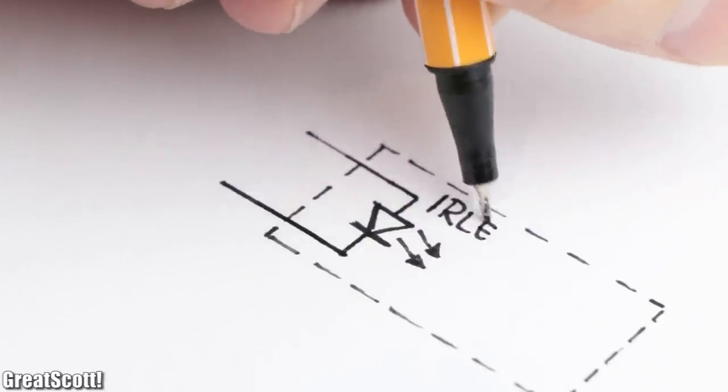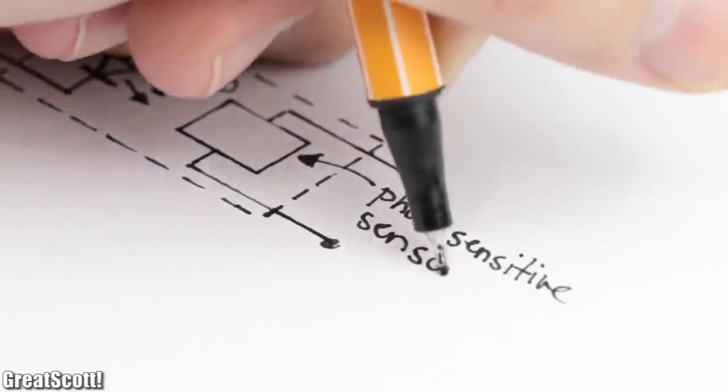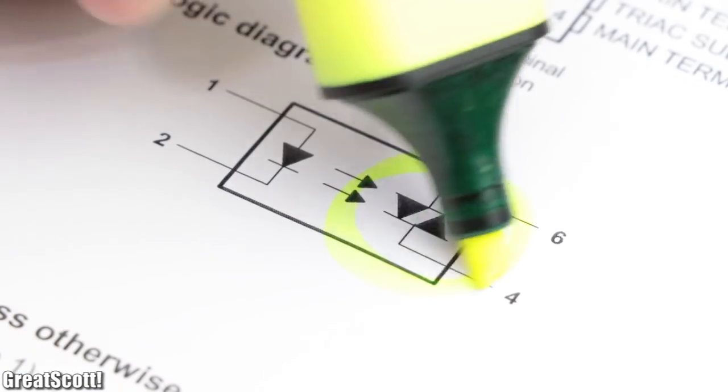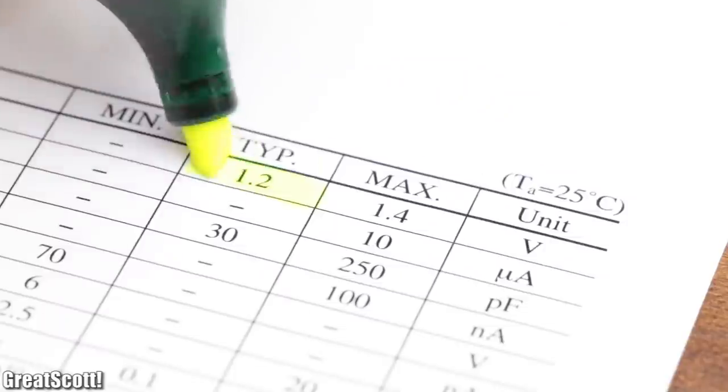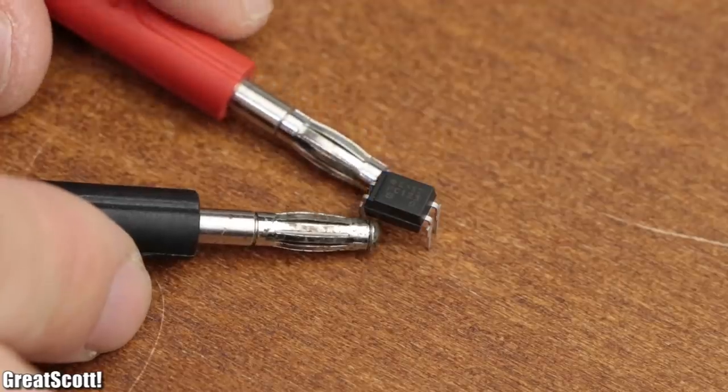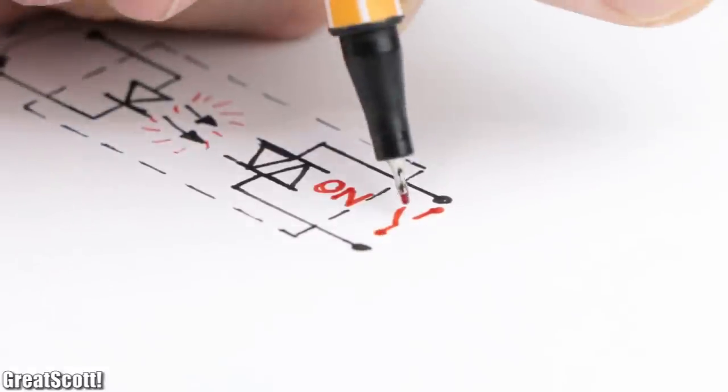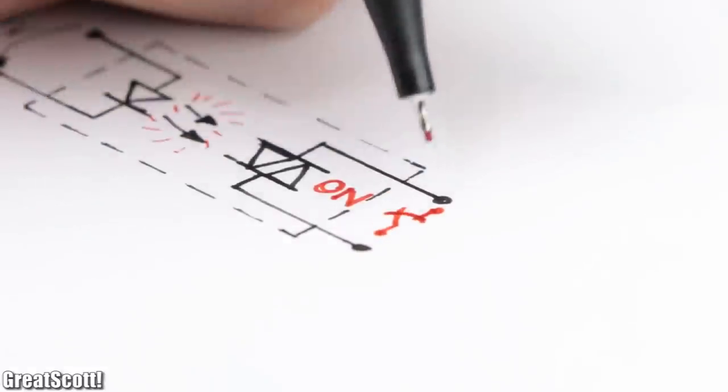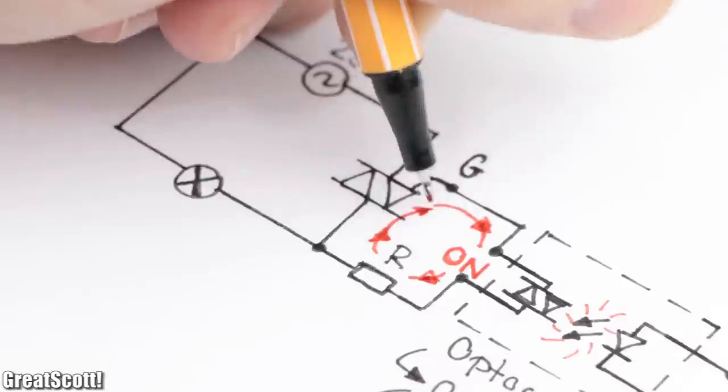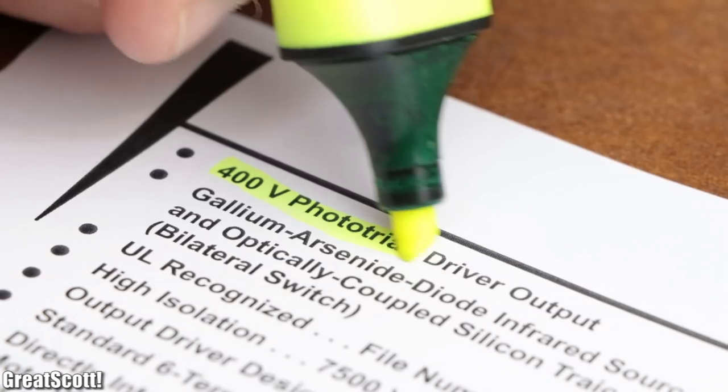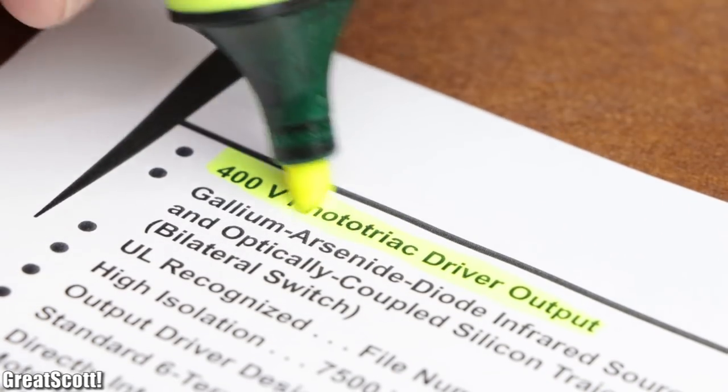Thus, by applying the 4V voltage mentioned in the datasheet to the IR LED, it lights up and therefore activates the transistor or TRIAC on the other side, which thus activates the AC mains voltage TRIAC we talked about earlier, since the optocoupler TRIAC can also handle up to 400 volts.